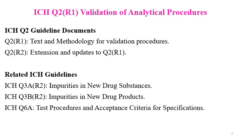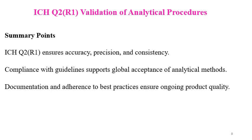The ICH Q2 guideline documents are Q2 R1 and Q2 R2. Q2 R1 covers tests and methodology for validation procedures, while Q2 R2 provides extensions and updates to Q2 R1. Related ICH guidelines include Q3A for impurities in new drug substances, Q3B for impurities in new drug products, and Q6A for test procedures and acceptance criteria for specifications.